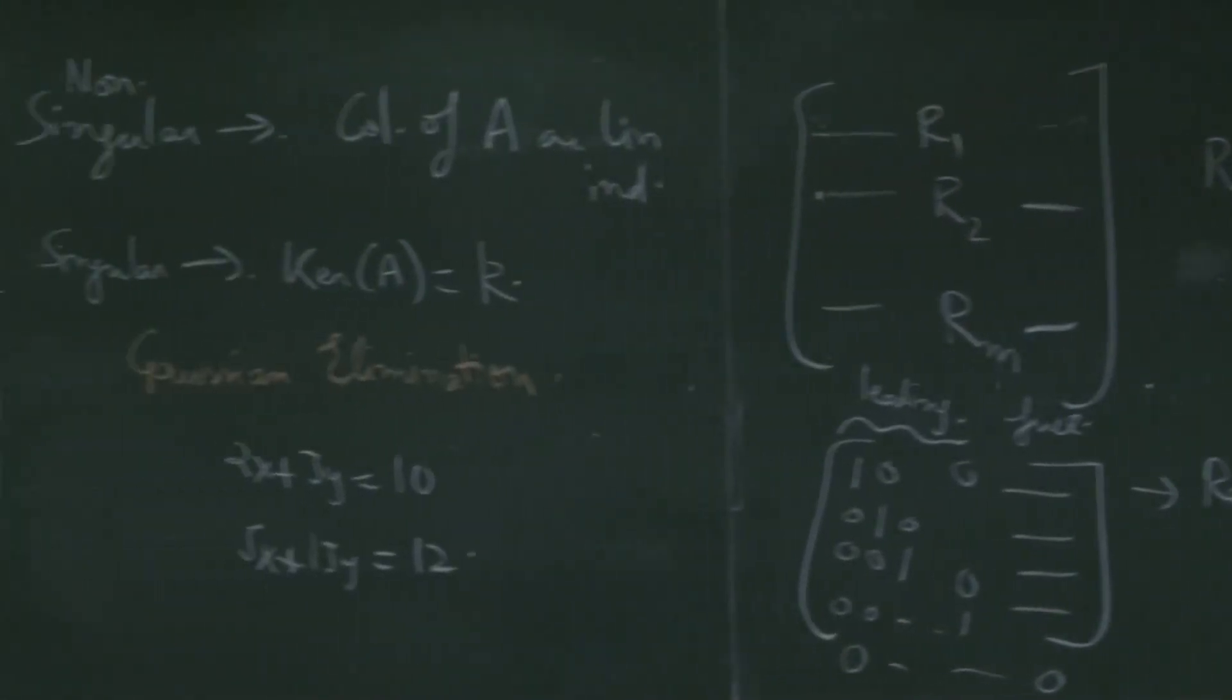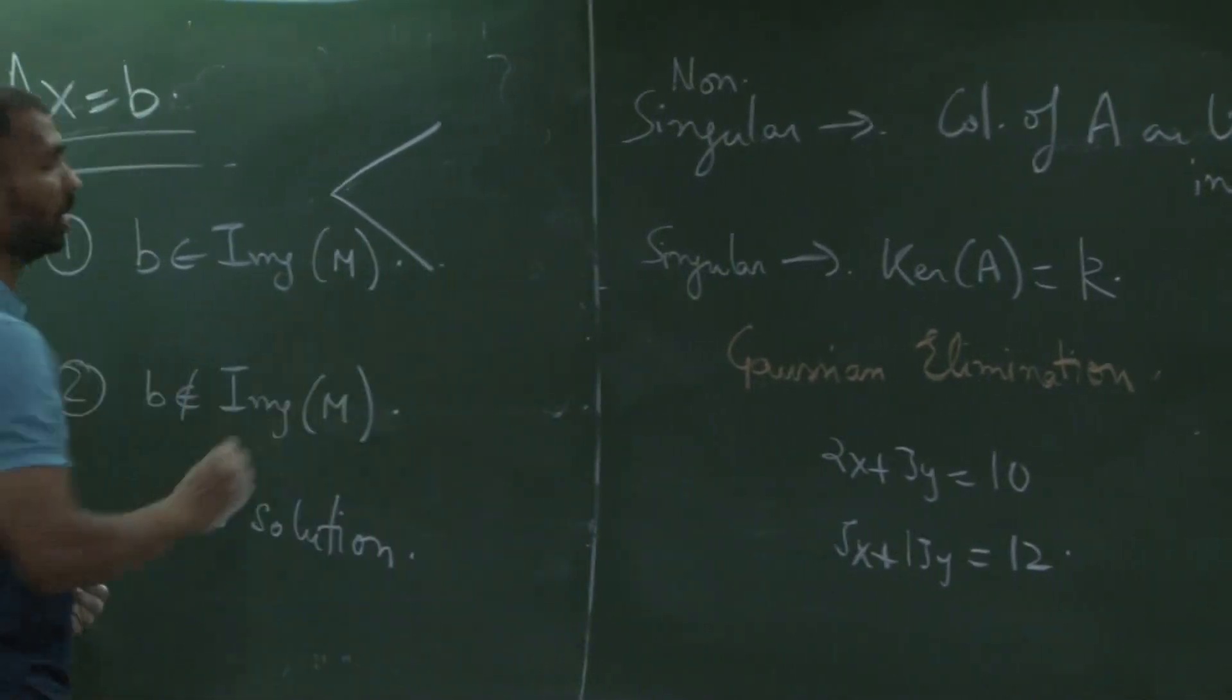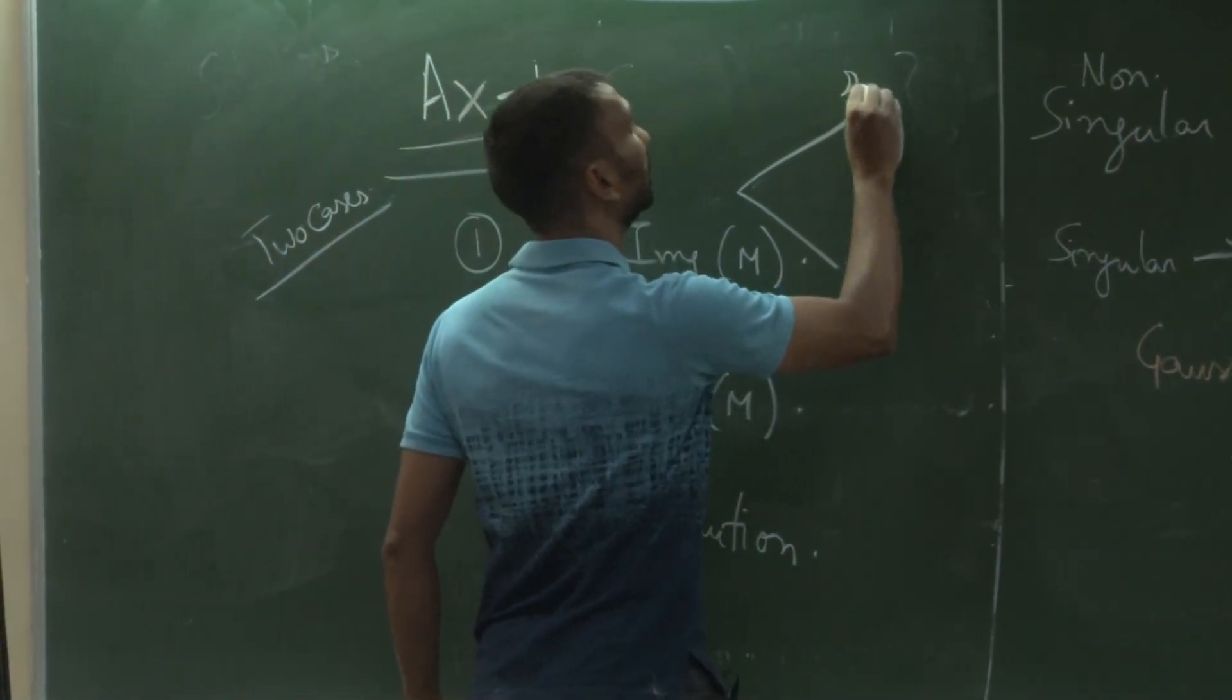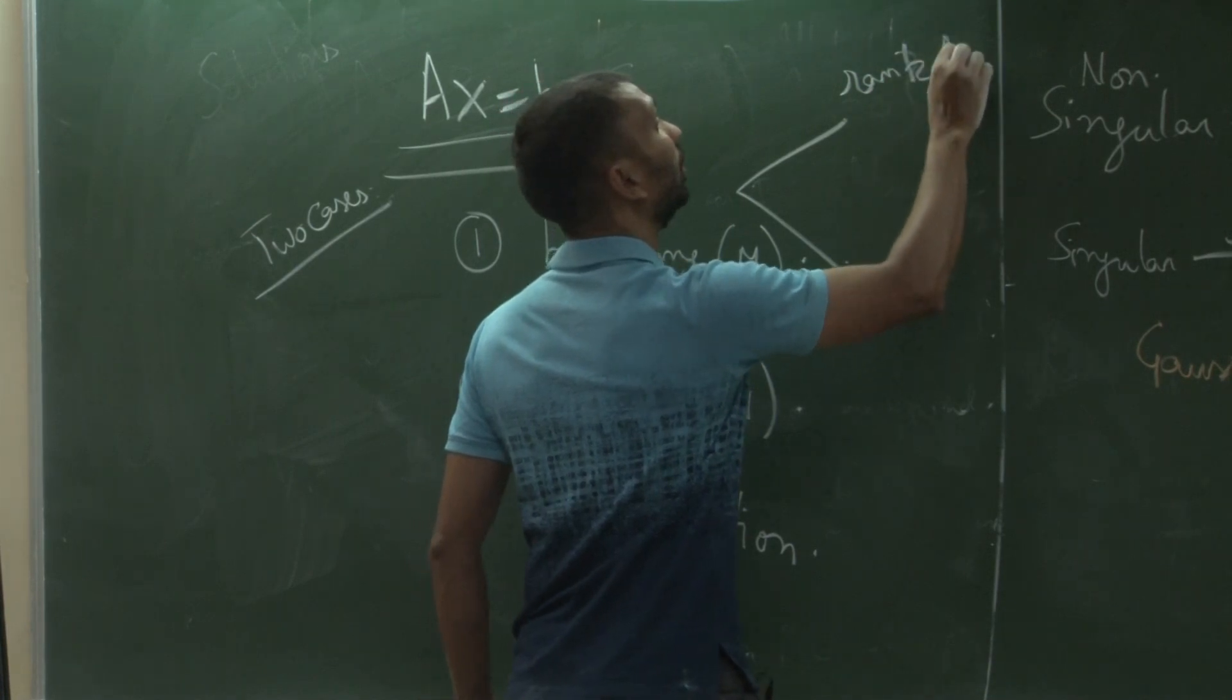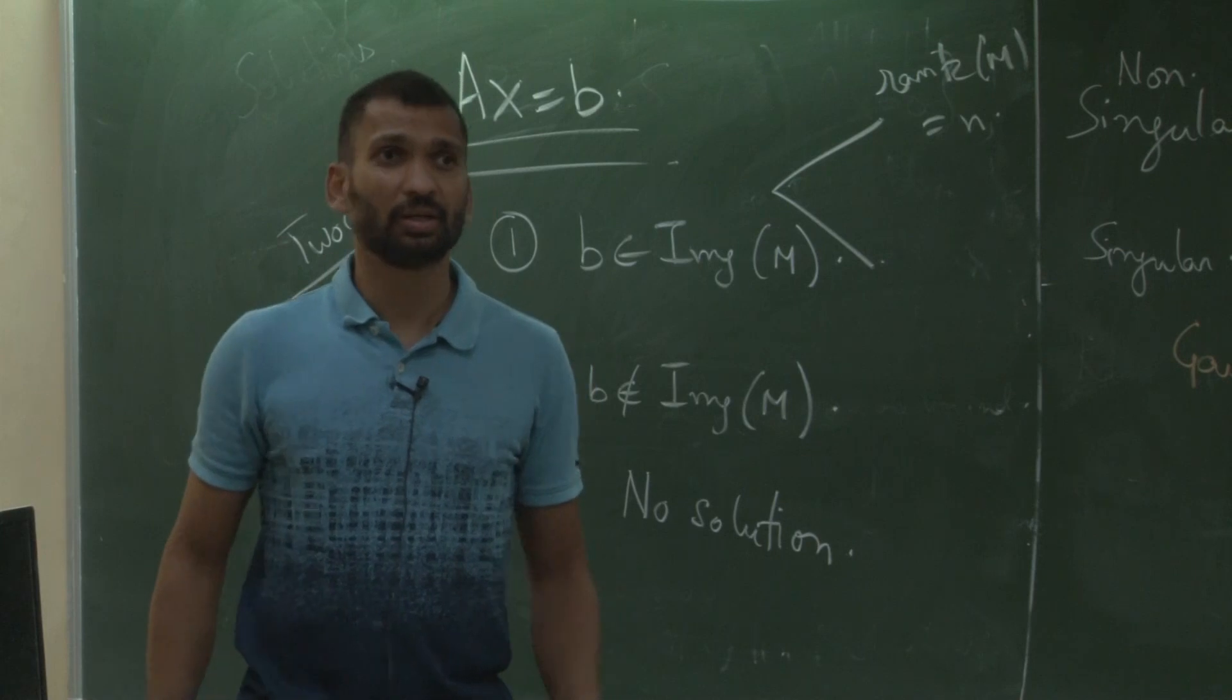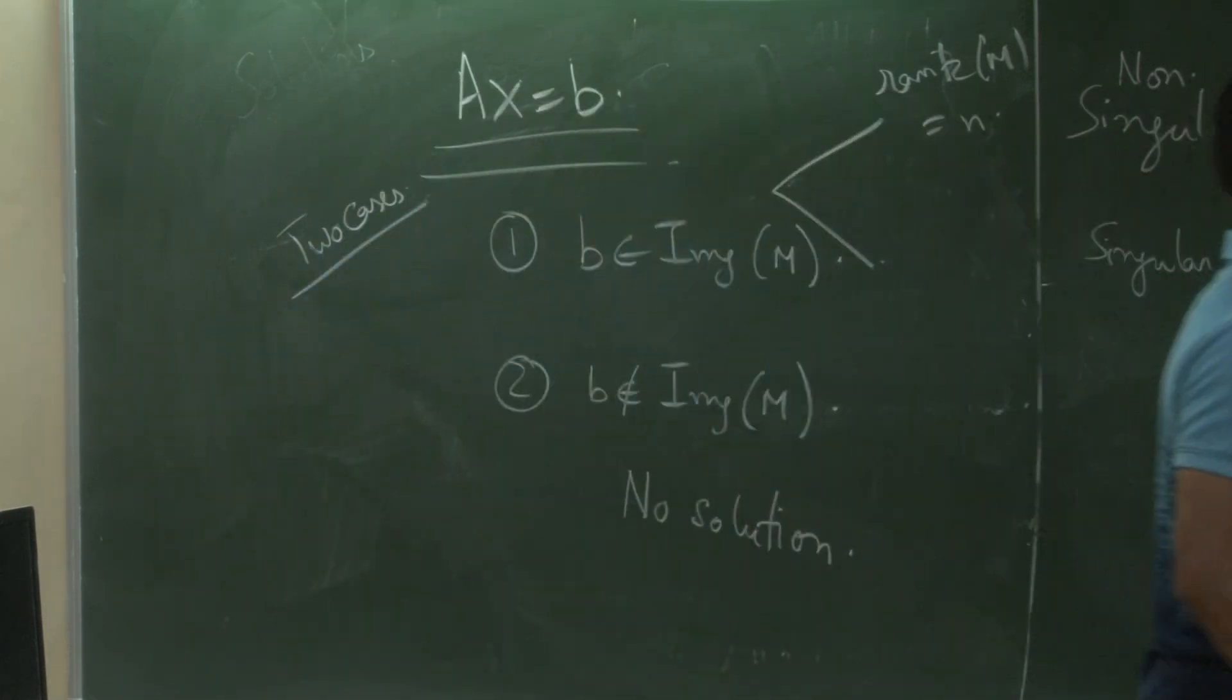So now, but when b is element of image of M, there are two ways. One is when rank of M is equal to 0. So it is n, right. Then what do I know? The columns of A are linearly independent. That means there is a unique solution.